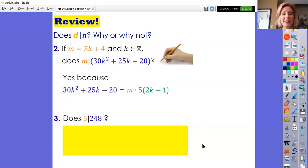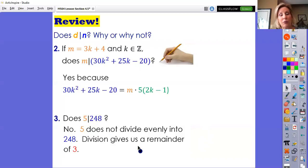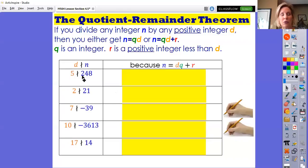So our last example in this review set: does 5 divide 248? Now you know 5 only divides numbers that end in 0 or 5, so no, it does not divide 248. You do know 5 would go into 245. That means it goes into 248 with a remainder of 3. Let's talk more about these. When 5 does not divide 248, it helps us transition into our first new topic, which is the quotient remainder theorem.